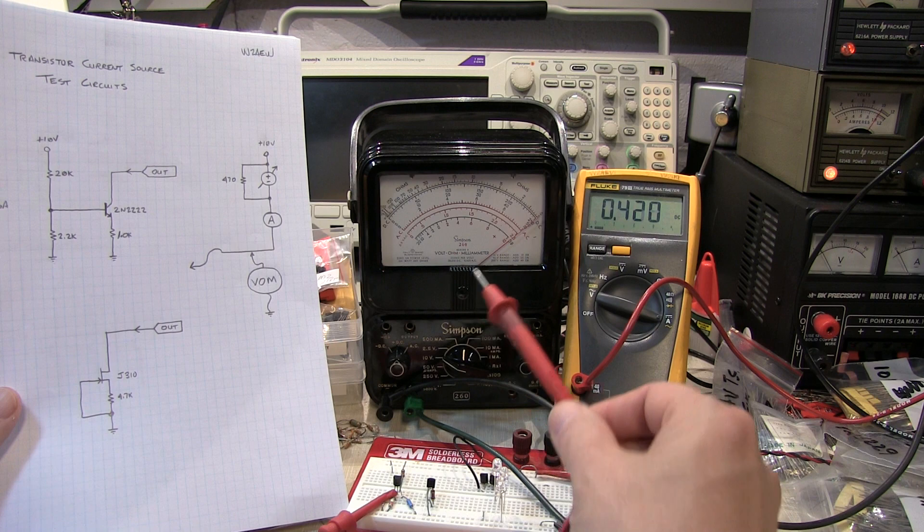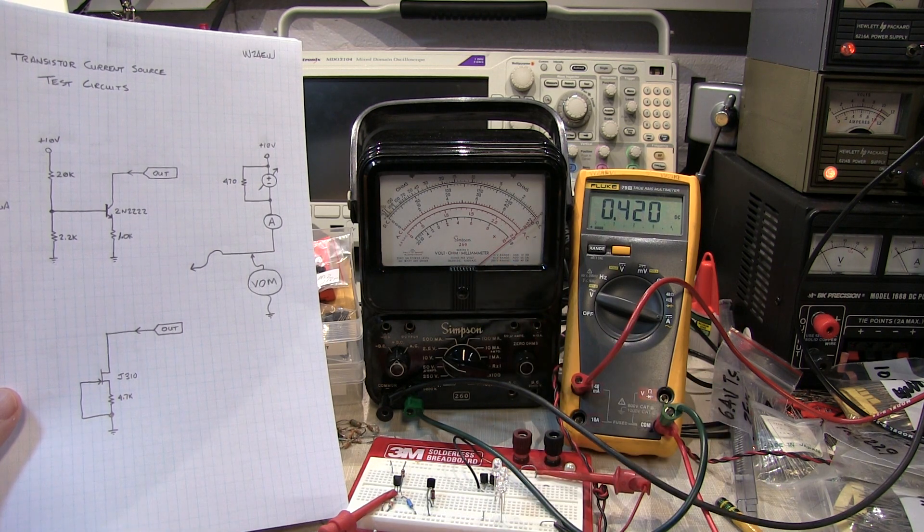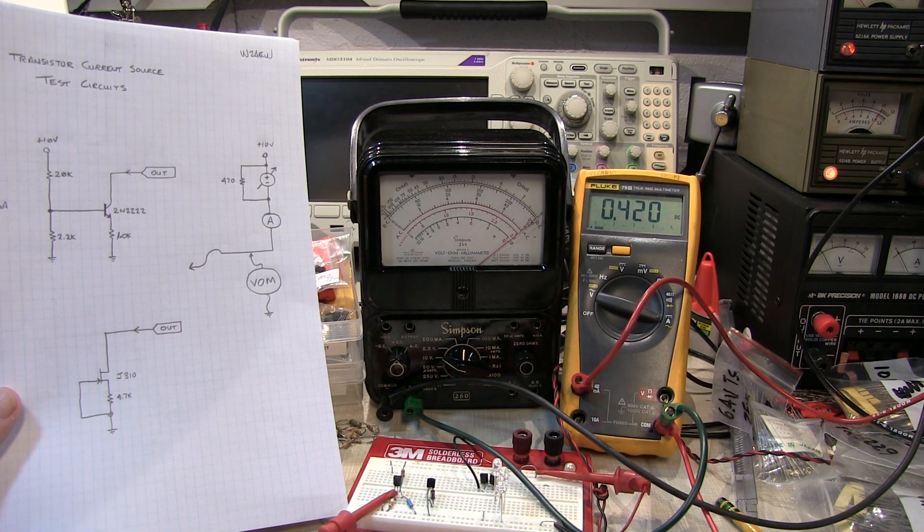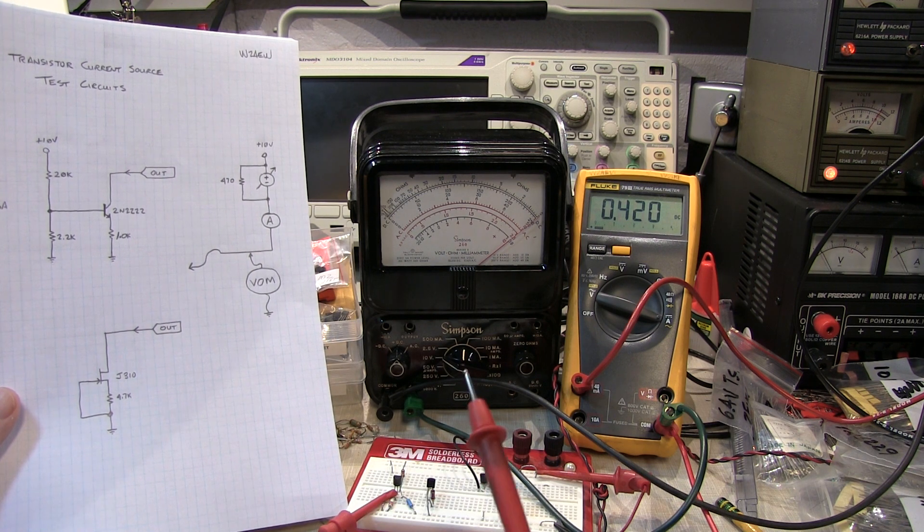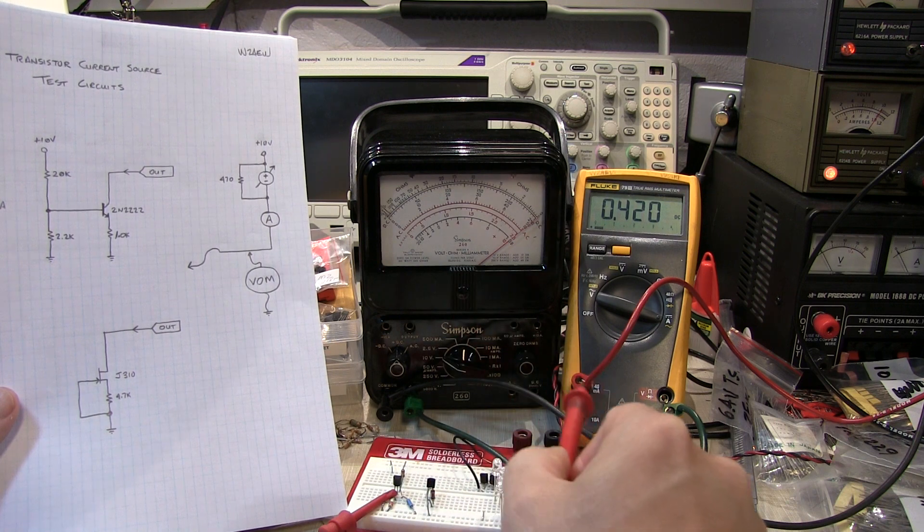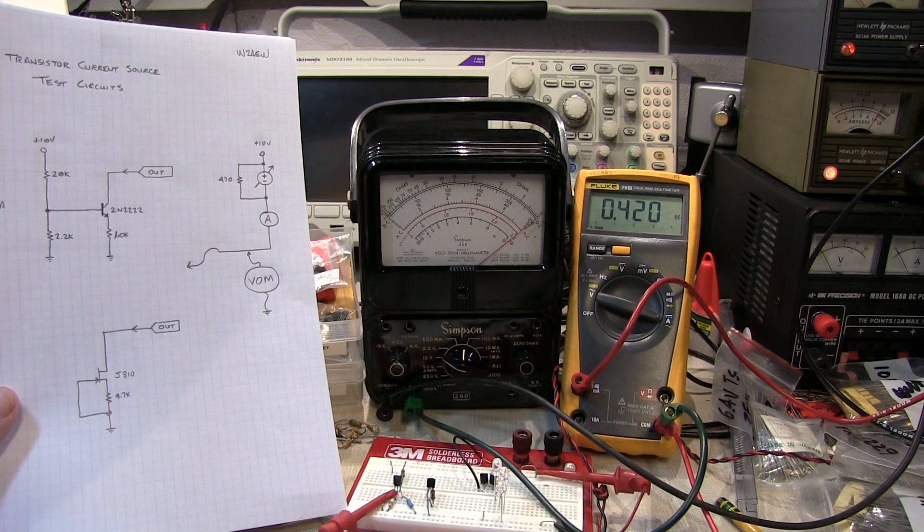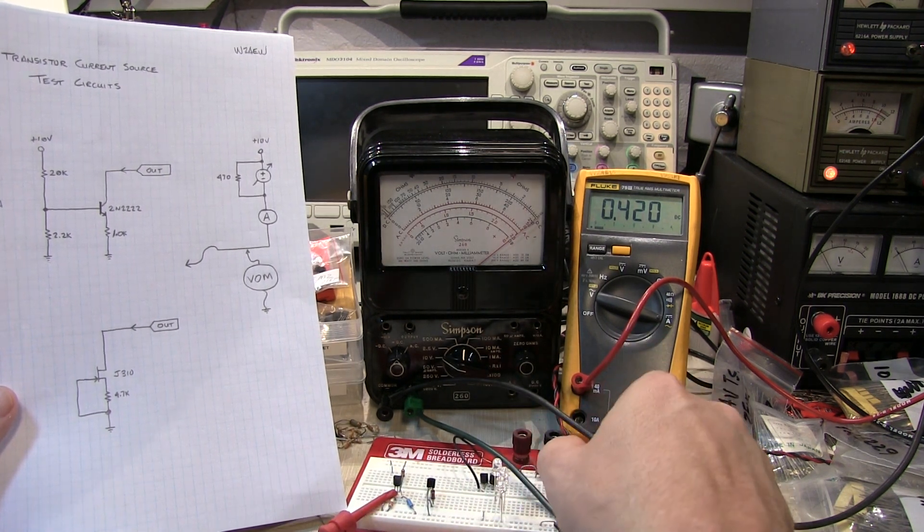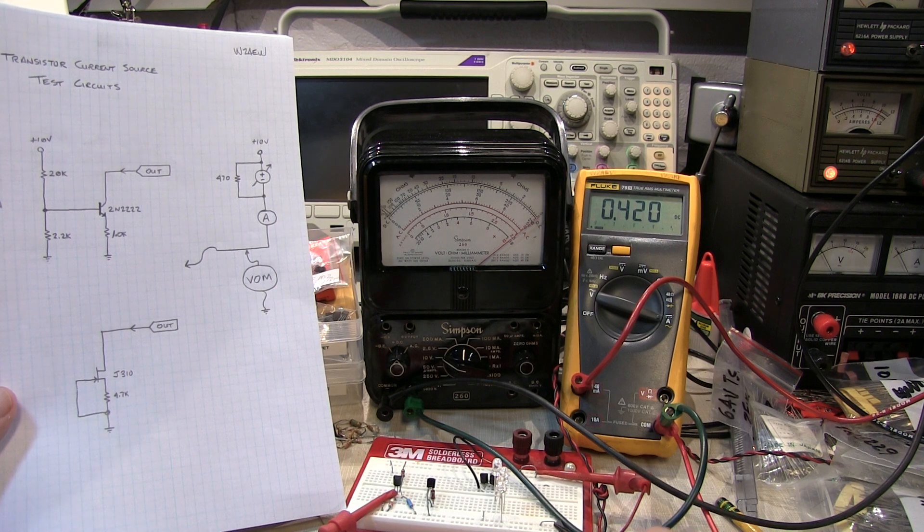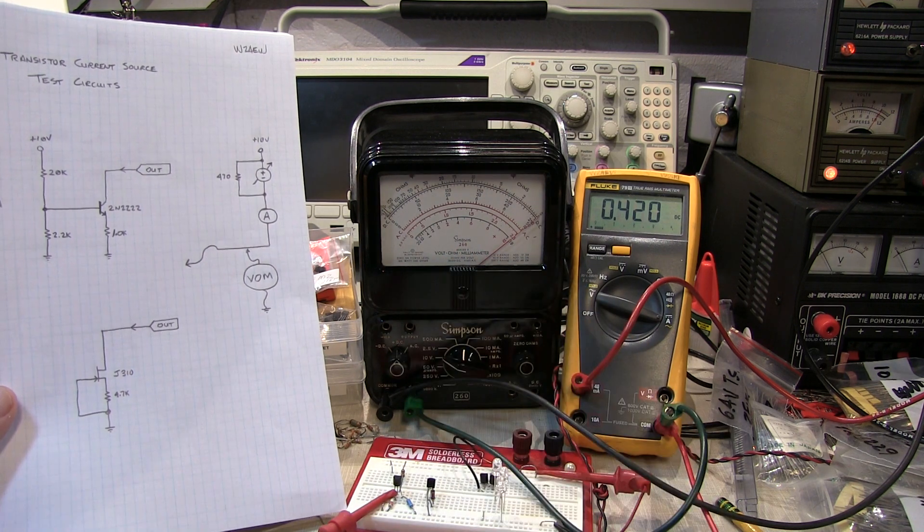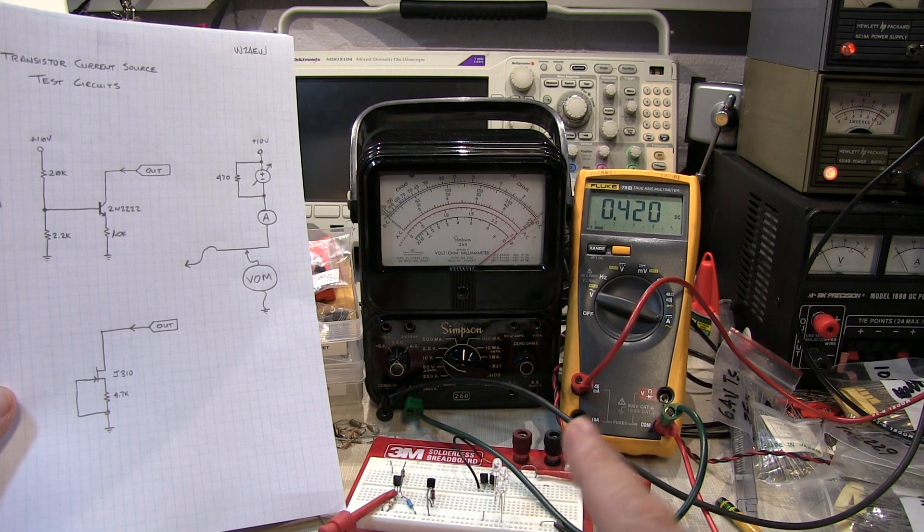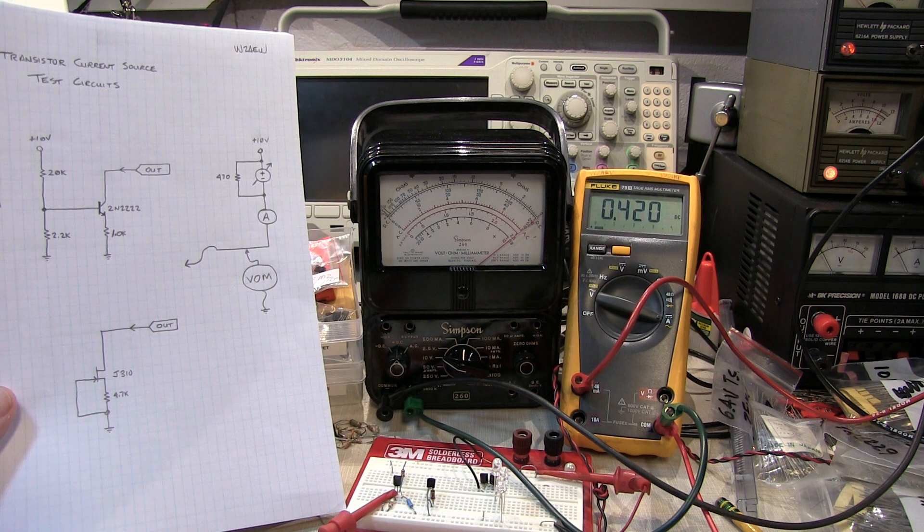I grew up using these analog meters like the Simpson 260 here. One of the things we get lazy about and forget is back then these meters didn't have the really high input impedance that modern digital multimeters have. When you're measuring voltage on a DMM, the input impedance is typically 10 megaohms. In most circuits you can ignore that, but that's not the case here with the Simpson 260. So let's take a look at what that is and how it affected my results.